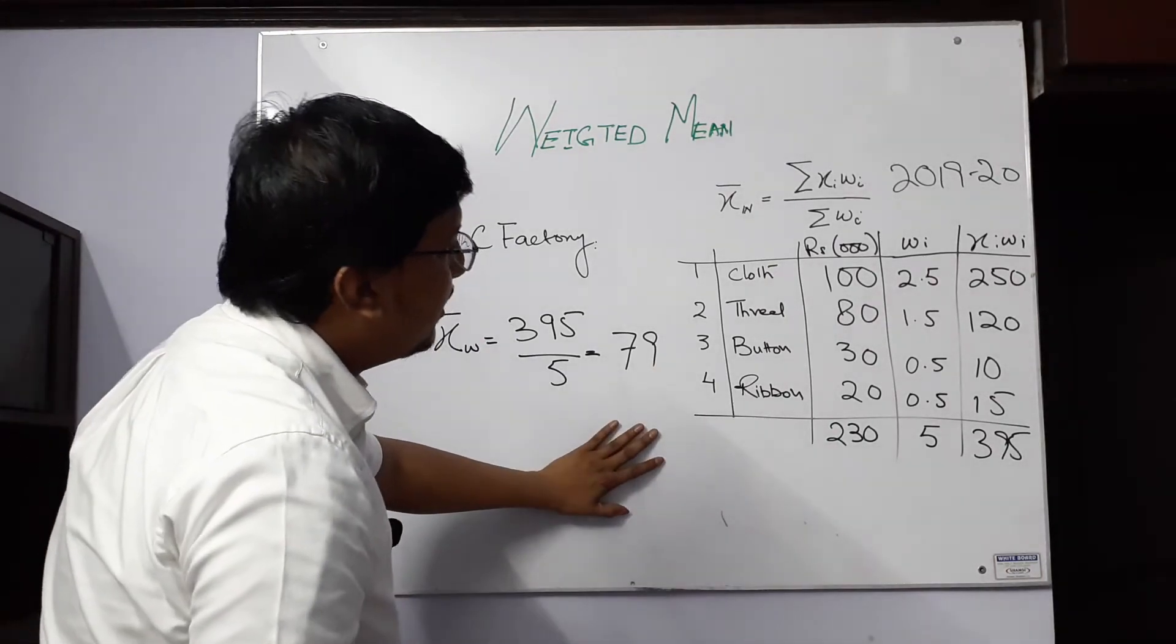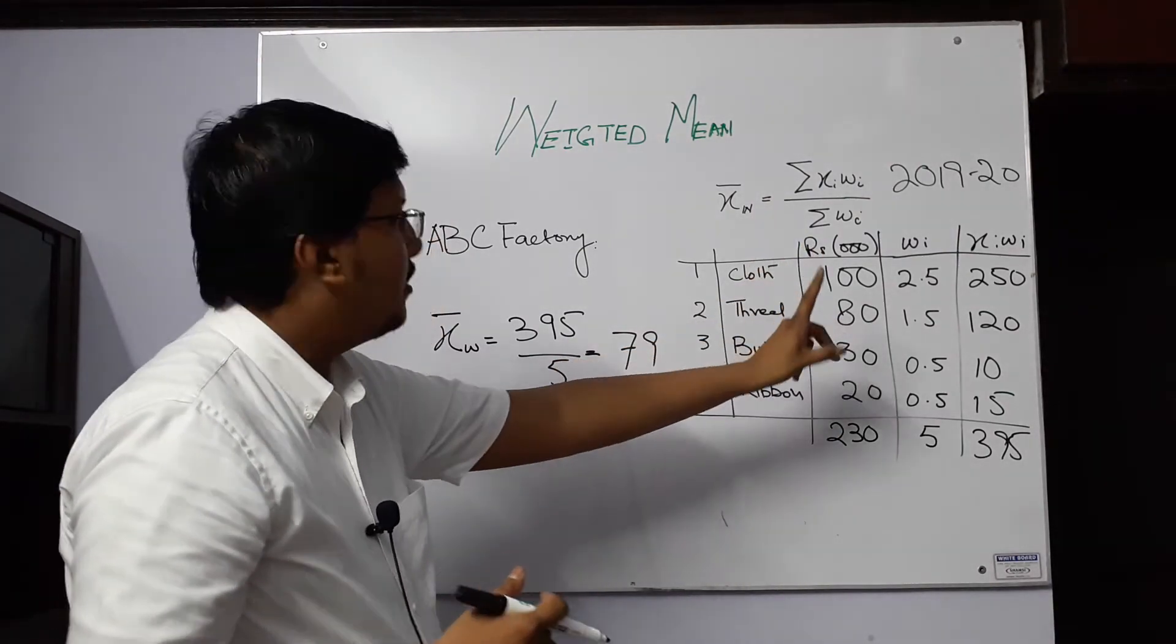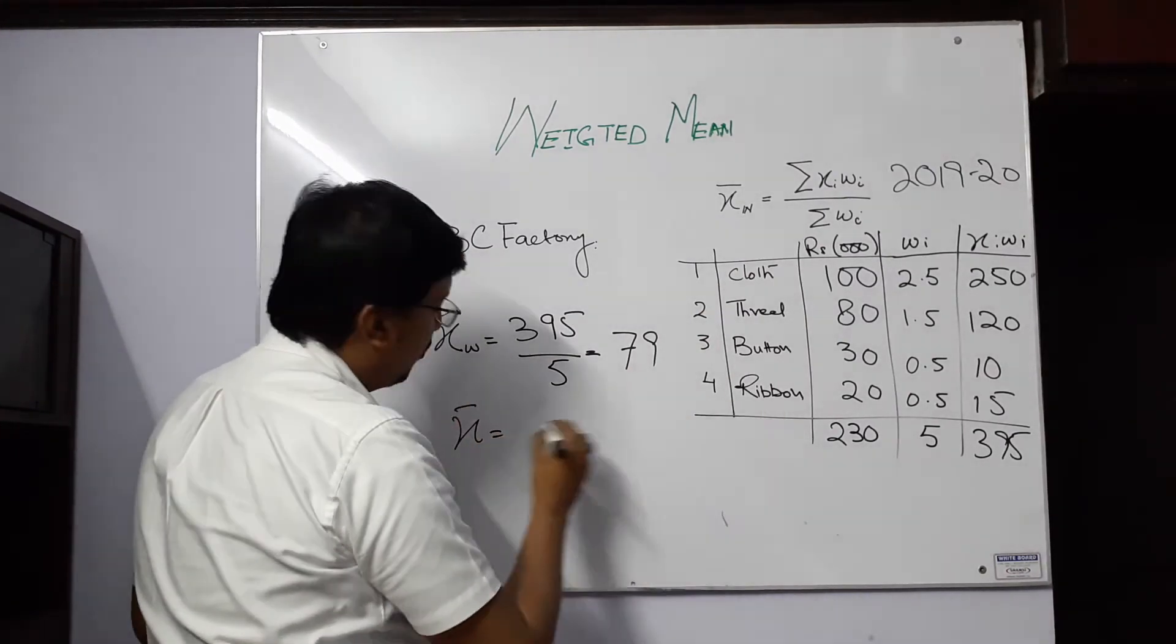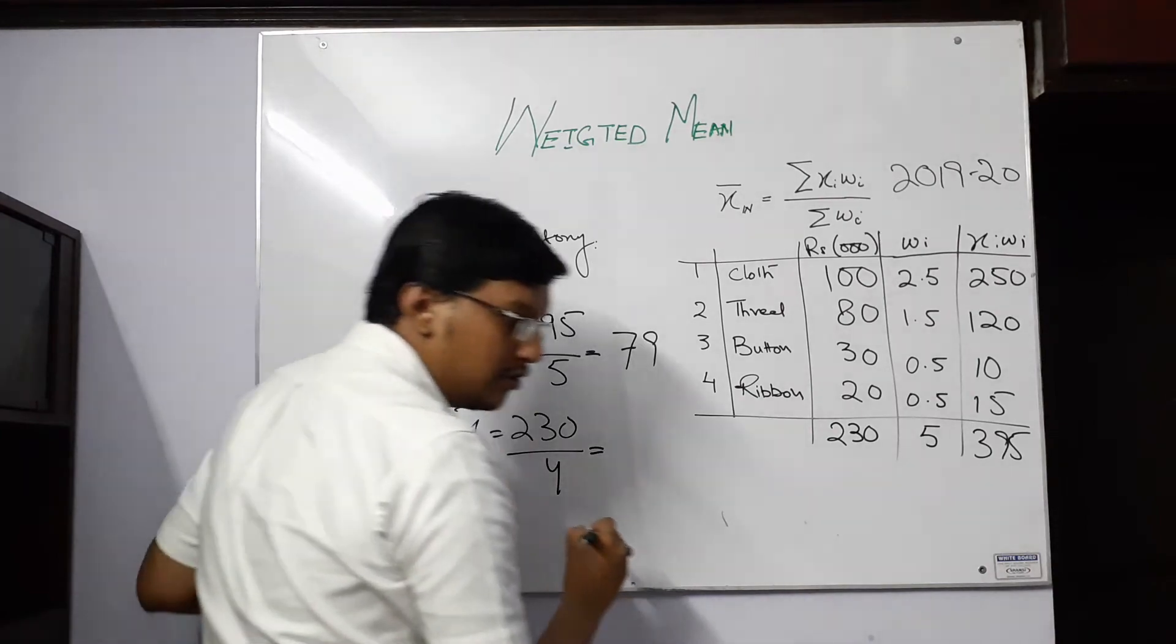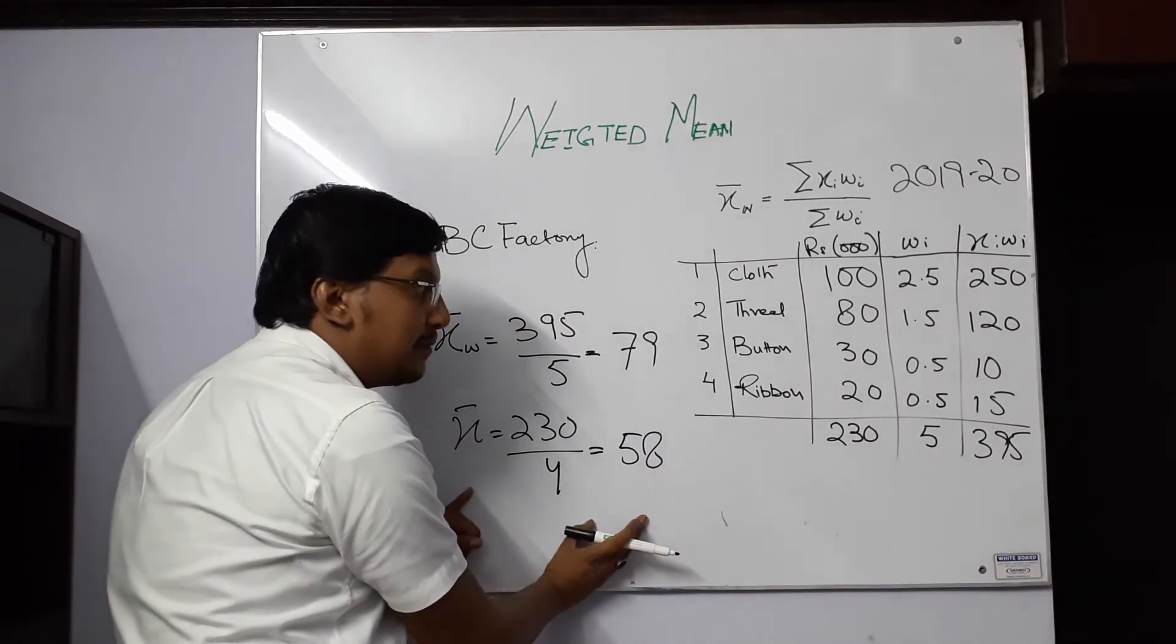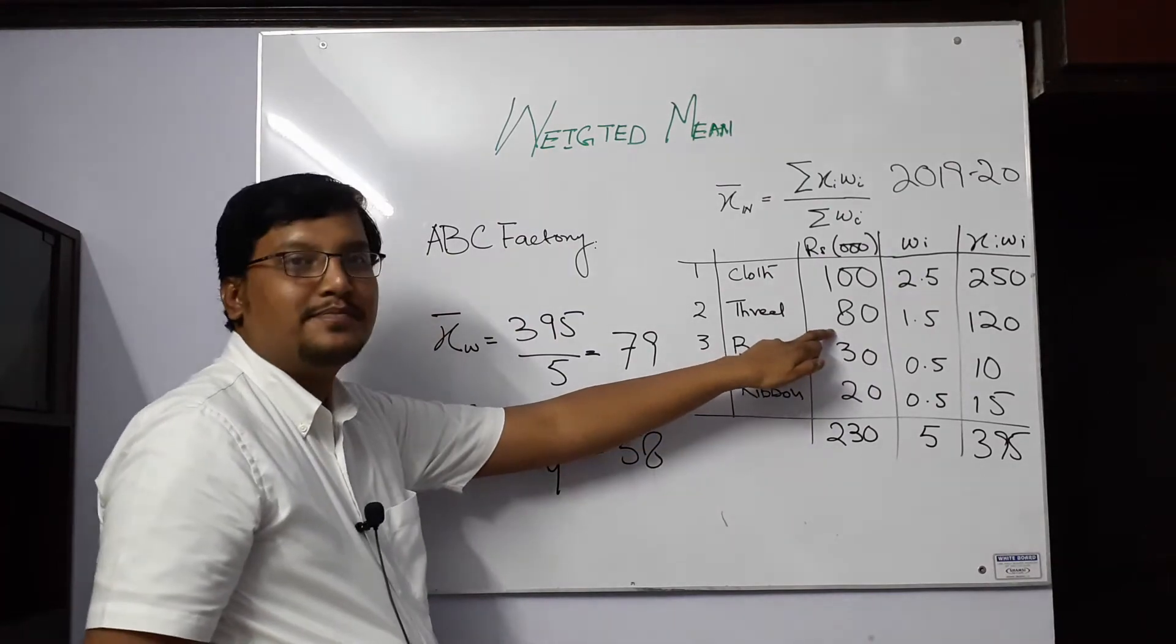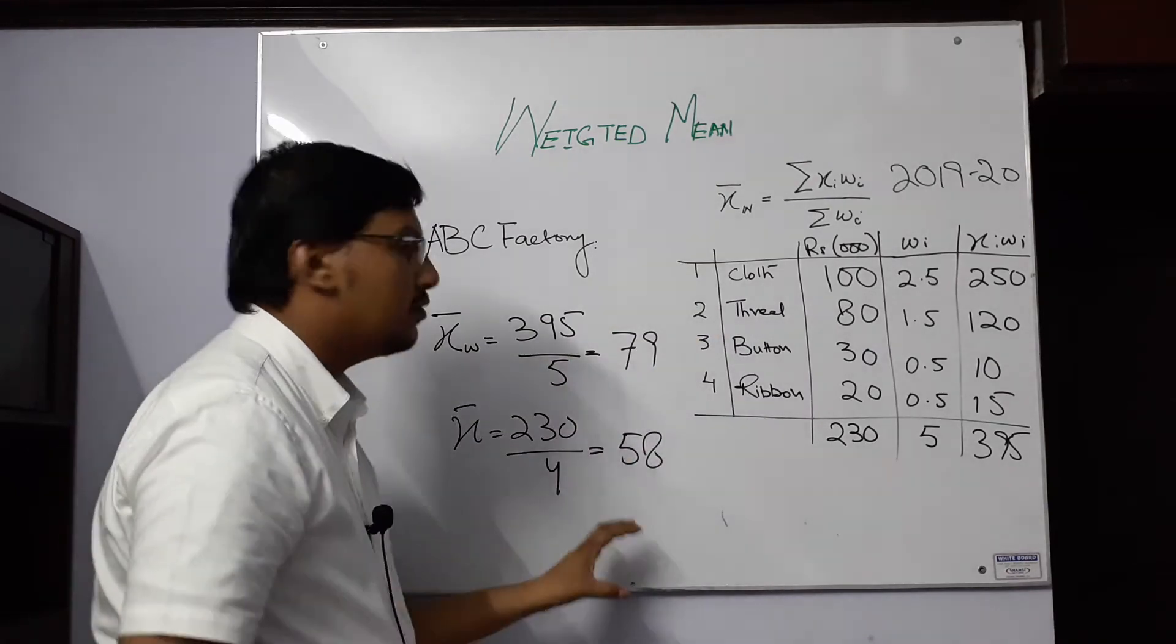For comparison purpose, if we calculate a simple average for the same problem, then all the weights will be 1. That means we remove the weight column and we have four different figures. If we talk about four different figures, then the sum is 230 and the number of observations is 4. If you divide it, then the answer is 58. This is simple arithmetic mean. It has a high figure and a low figure and has centralized it, 30 to up and 80 to down, a response in the center, 58. I am telling you that almost all sectors have 58,000 rupees cost.